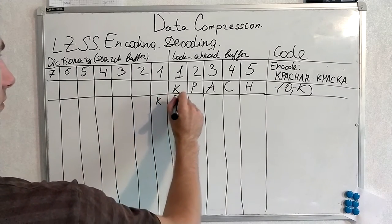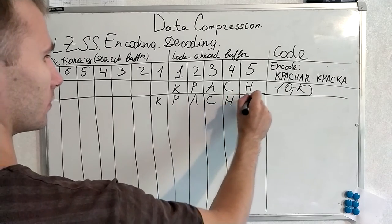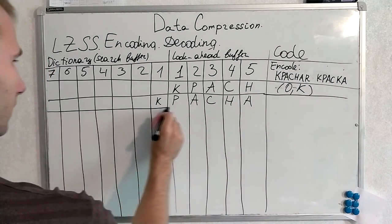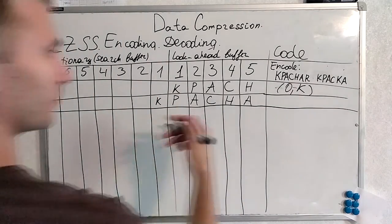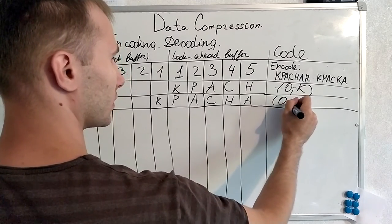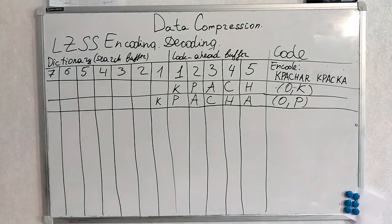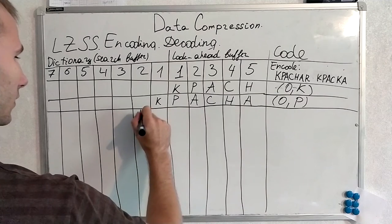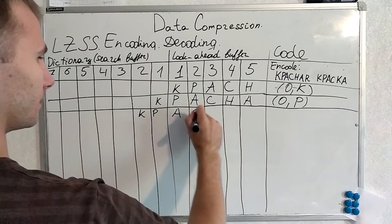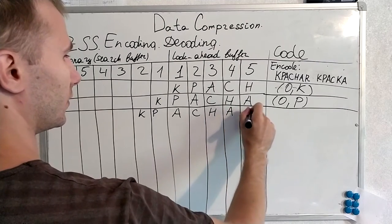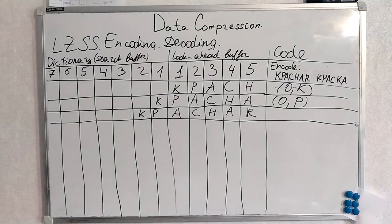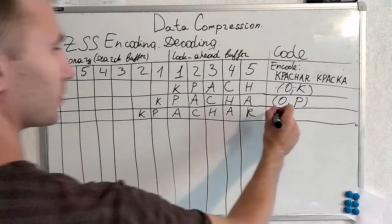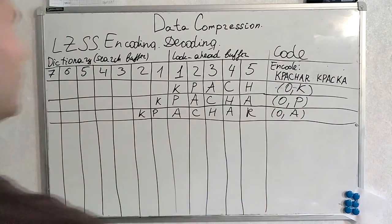Put it here. We want to encode P now but dictionary is empty, almost empty. There's only K. We encode P like this. Next step, we will have two symbols in our lookahead buffer. Here we are. And yet there is no A. That's the encode 0 and A.